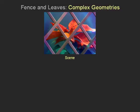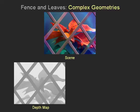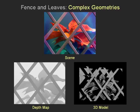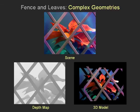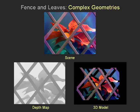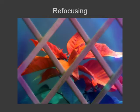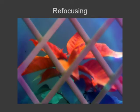In this scene with leaves behind a fence, the occlusions are very complex. A complete depth map of such a scene, like this one computed by our method, is not easily obtained by stereo or structured light methods, even when a large number of cameras are used. The 3D model reveals the complexity of the scene. The synthesized refocusing video captures the way the scene would appear through a telephoto lens while its focus is varied.